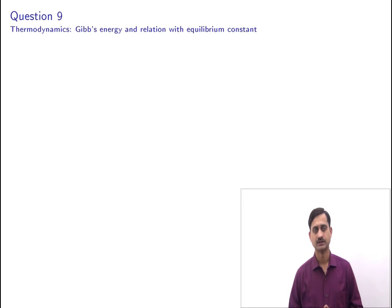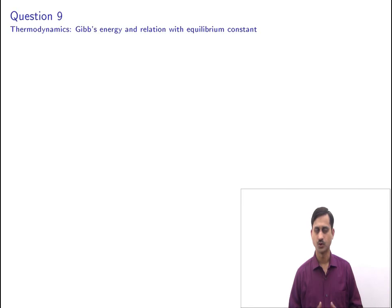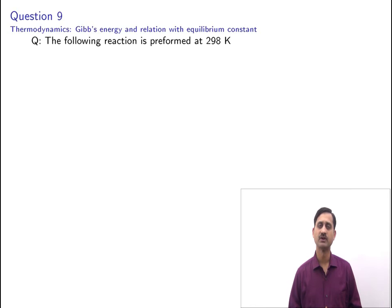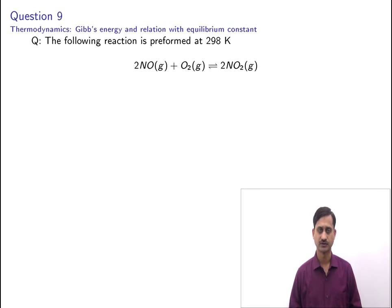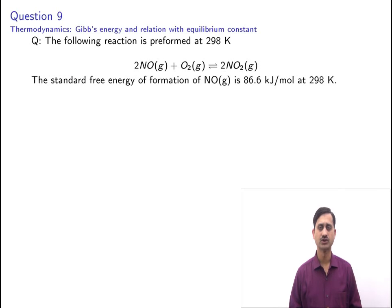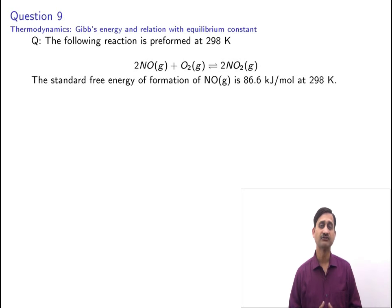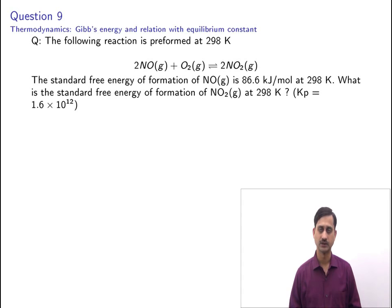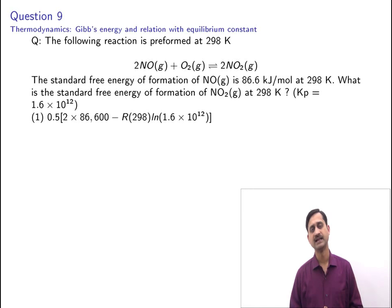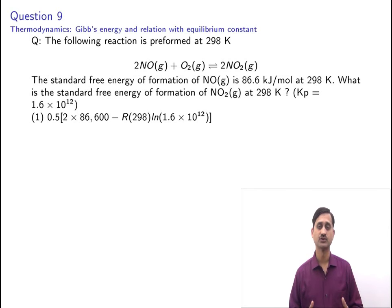The next question is from thermodynamics — the relation of Gibbs energy with equilibrium constant. The reaction is: 2NO(g) + O₂(g) ⇌ 2NO₂(g) at 298 K. The standard free energy of formation of NO(g) is 86.6 kJ/mol at 298 K. What is the standard free energy of formation of NO₂(g) at 298 K? Kp = 1.6 × 10¹². The first option is 0.5 × [2 × 86,600 − R(298) ln(1.6 × 10¹²)].